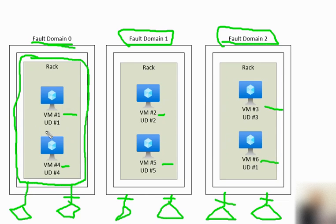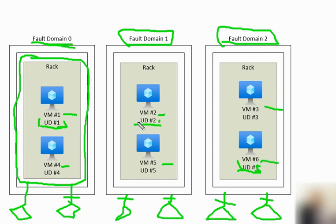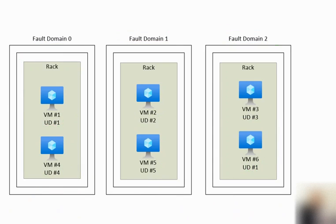We also have update domains (UD). Update domain 1 spans certain VMs — if you see update domain 1 here as well, both updates will occur at the same time and both VMs will have the same impact. Update domain 2, update domain 3, update domain 4, and update domain 5 are similarly distributed. This is how fault domains and update domains are distributed — this is a logical diagram showing that layout.